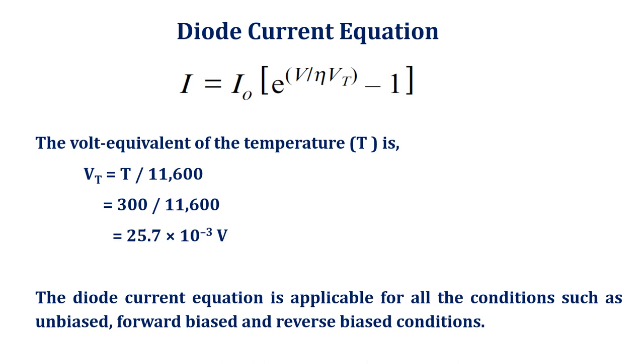If the diode is unbiased, V equals zero, hence we get current is zero amps. For forward biased condition, V must be taken as positive and we get current I as positive. For reverse biased condition, V must be taken as negative and we get current I as negative.